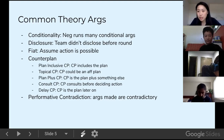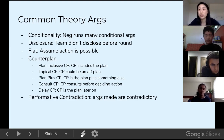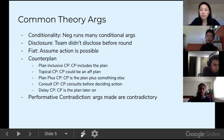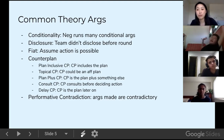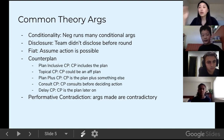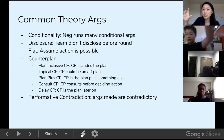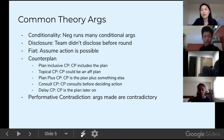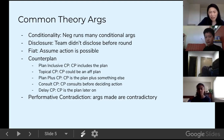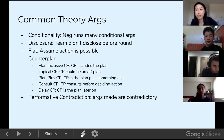Delay CP is what it sounds like — a counterplan that delays the plan. For example, if the topic is about policing and the election is this year, we know the plan might get circumvented. So Delay CP says: let's wait until after the election, then propose the plan. There's no difference in the affirmative except for when it happens — that's why affirmatives think it's abusive.